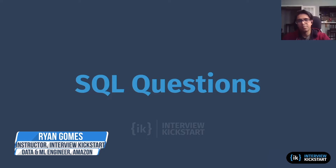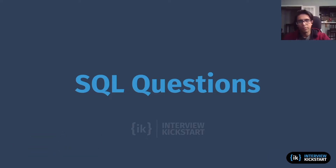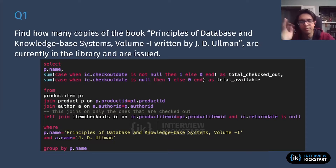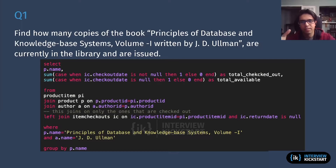We're going to finish up by looking at some of the SQL questions for the library data design. The first question is: find how many copies of the book 'Principles of Database Design' written by JD Ullman are currently in the library and are issued. The key points are how many are currently in the library and how many are issued — this was one of our key requirements around tracking available and checked-out books. We know we'll definitely be using the item_checkouts table to track those transactions, and we're filtering by book title and author JD Ullman.